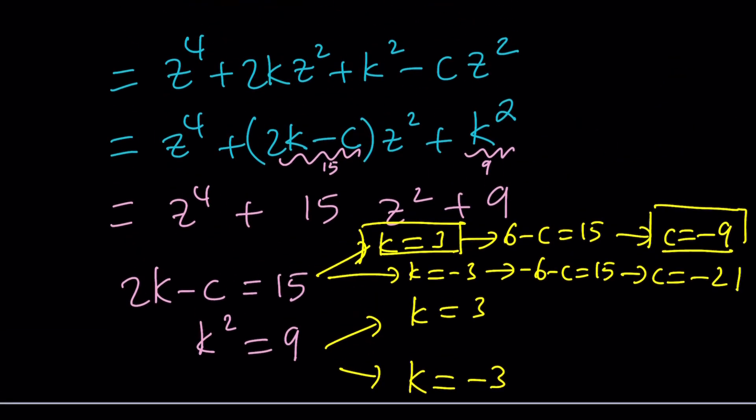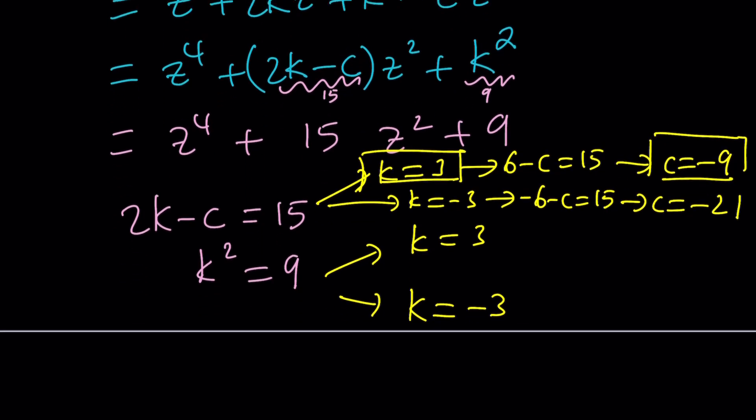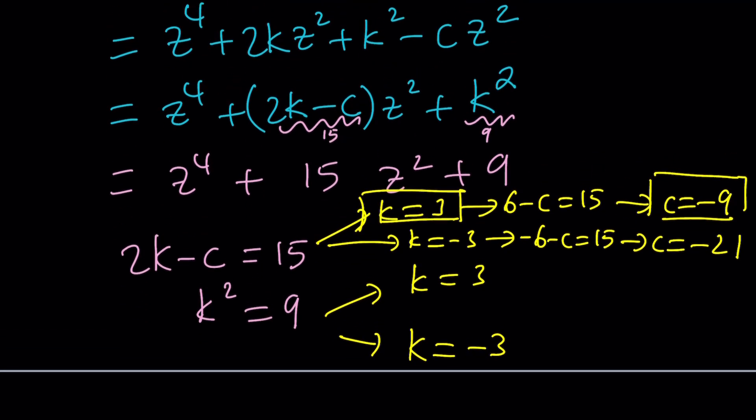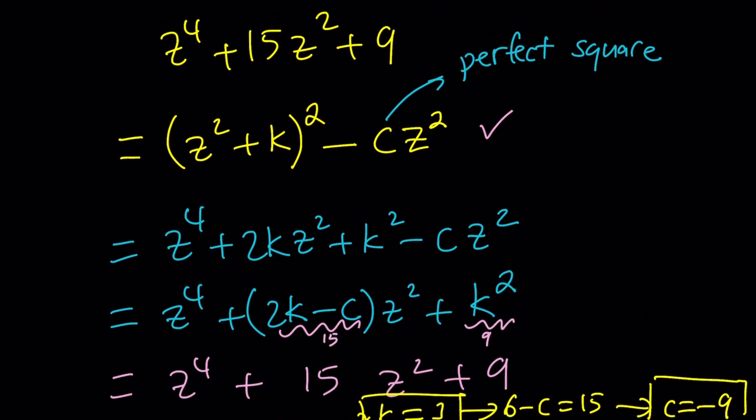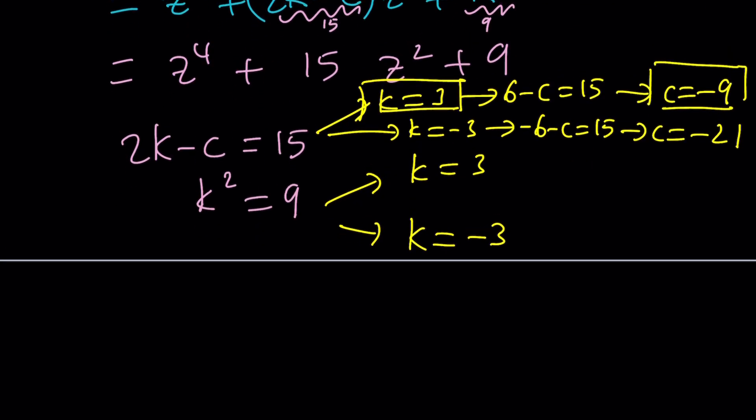But here's the problem with that. And I know this has been mentioned in the comment section, but I think in a long, rather circuitous way. Anyways, c equals negative 21 doesn't work because I want c to be a perfect square. And negative 21 is not a perfect square. So unfortunately, we have to reject it, which means we also have to reject k equals negative 3.